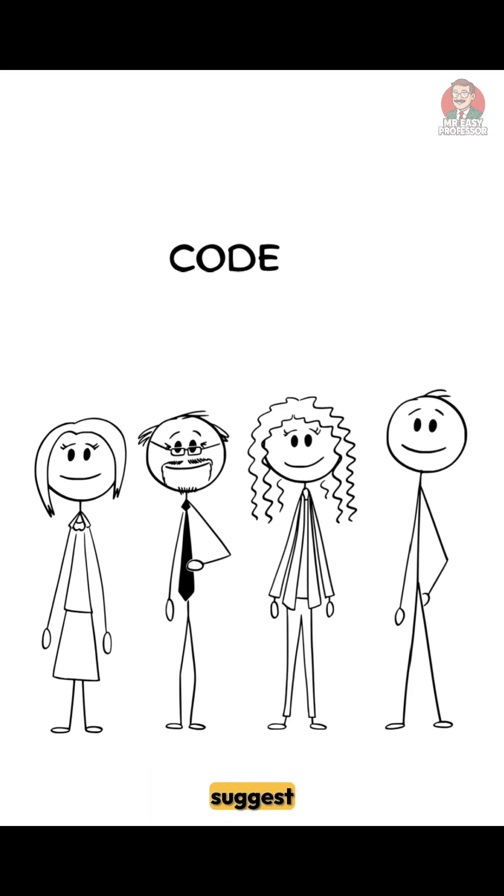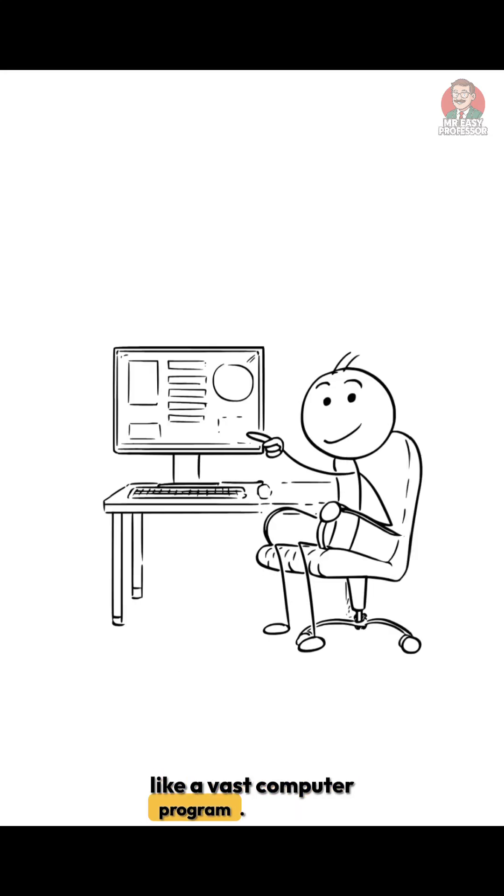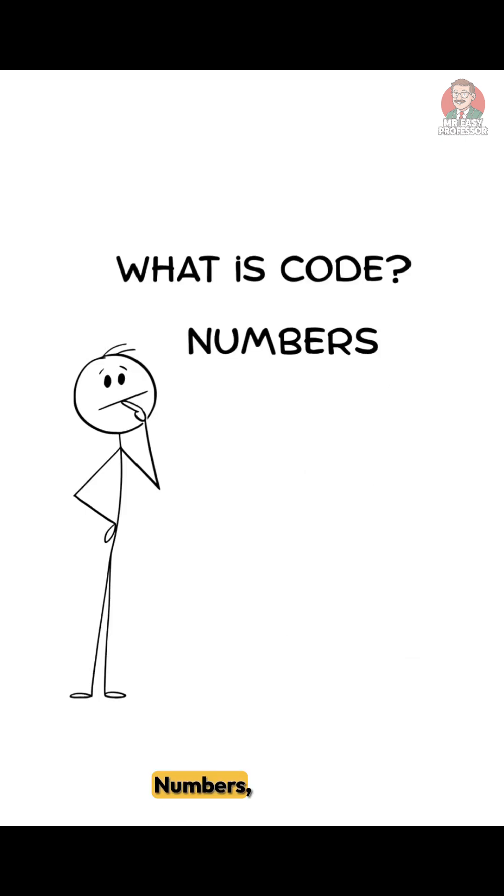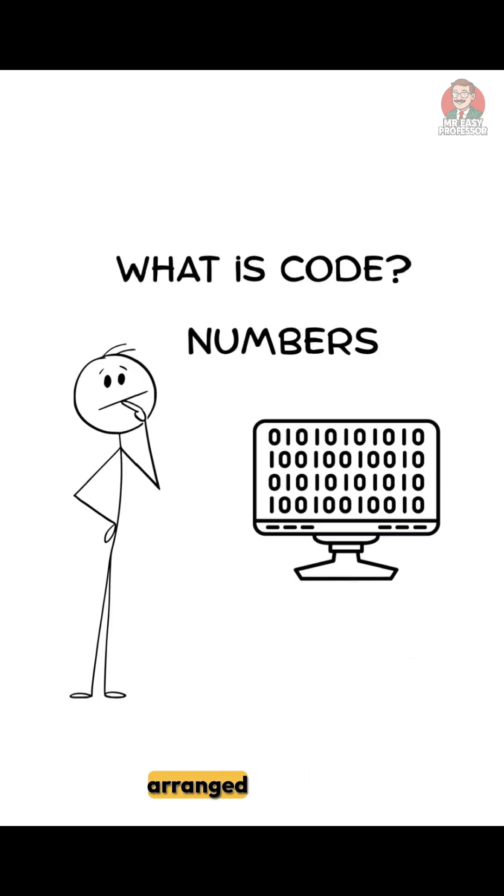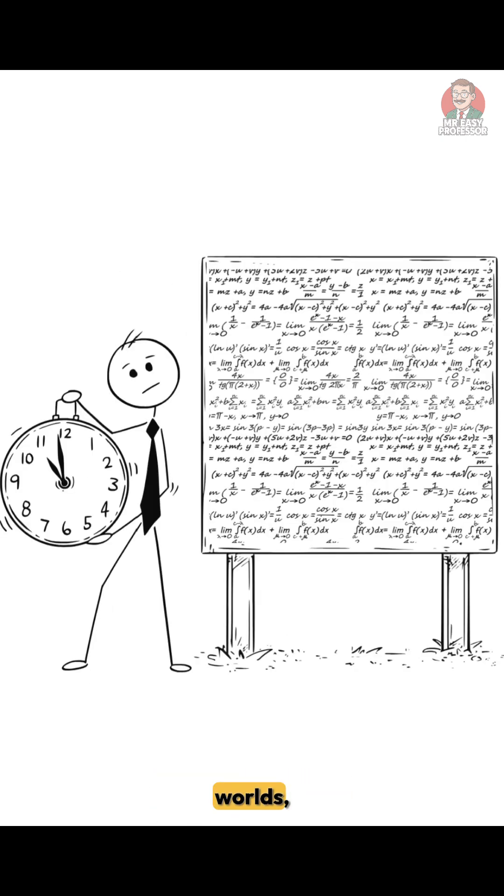Some scientists and philosophers suggest that reality might be nothing more than code, like a vast computer program. Code is simply numbers - ones and zeros - arranged into patterns that create worlds, just like equations describe ours.